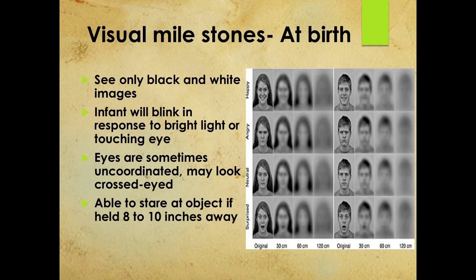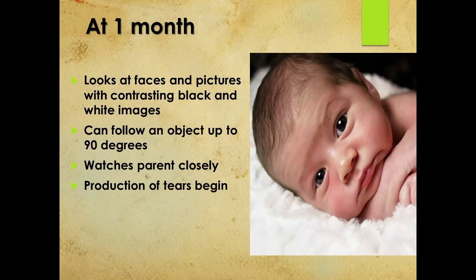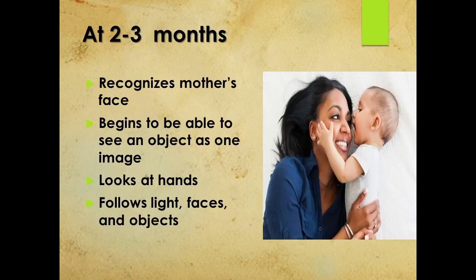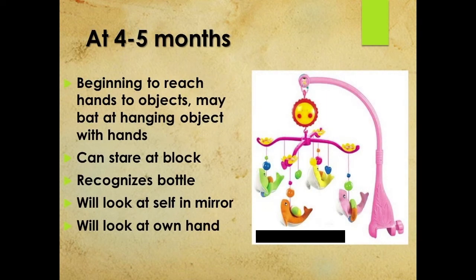The infant will blink in response to bright light or touching the eye. During the first month of life, the eyes start working together and vision rapidly improves. Eye-hand coordination improves; the child starts looking at faces and pictures with contrasting black and white images, can follow objects up to 90 degrees, and watches parents closely. Tearing production starts. During the second and third months, the baby begins recognizing the mother's face, is able to see objects as one image, and fixation develops. If the infant's eyes appear crossed, evaluation is needed.